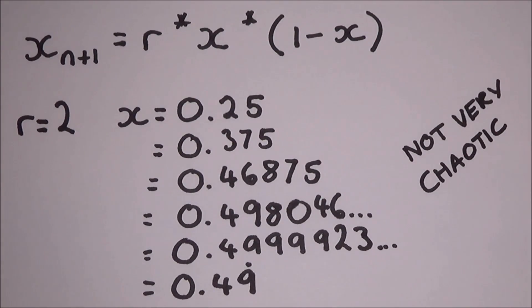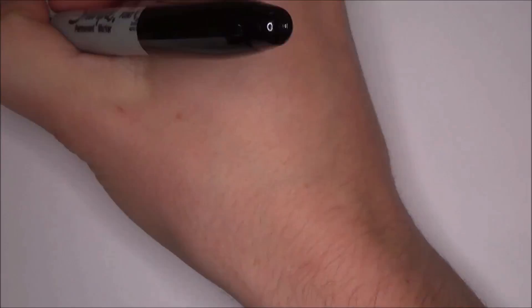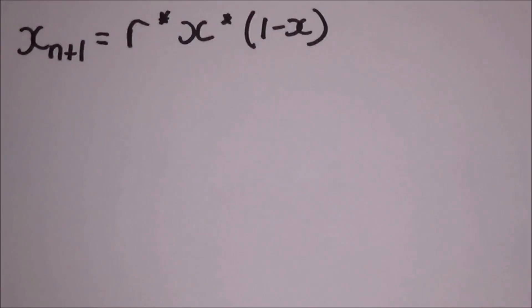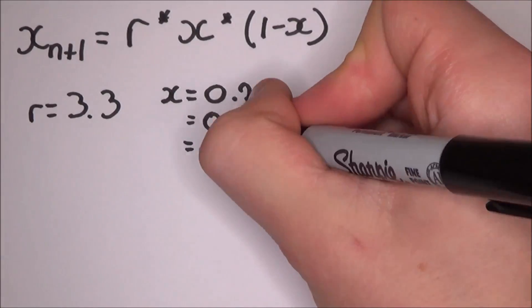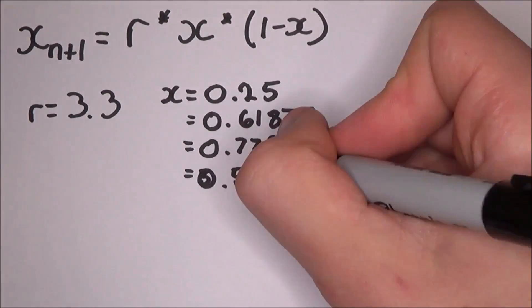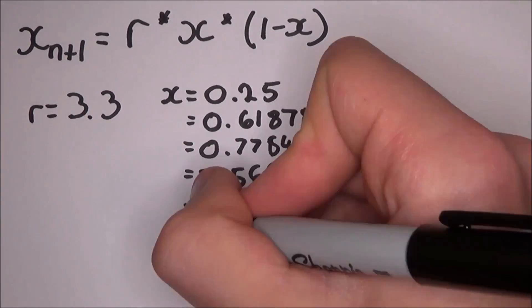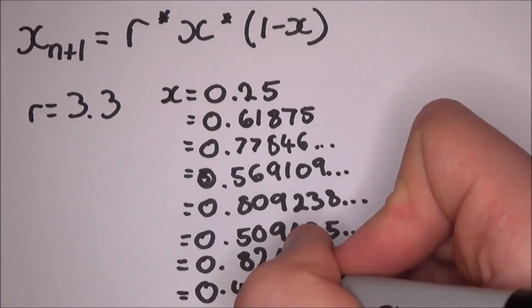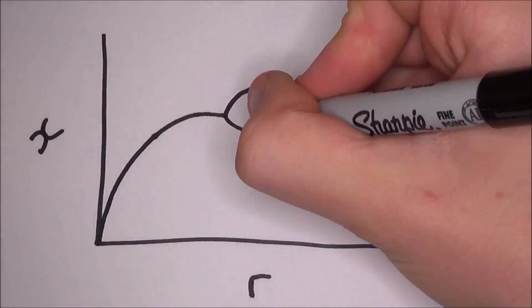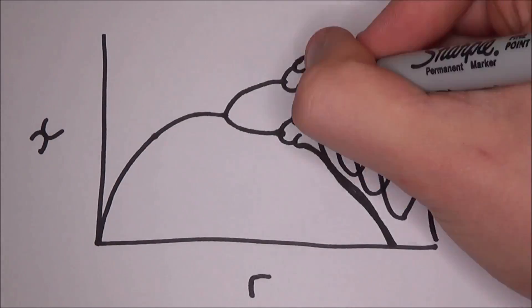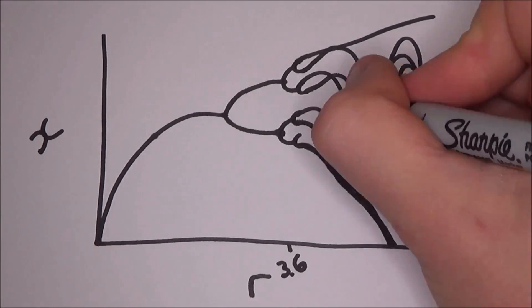This is a regular attractor — doesn't seem very chaotic. But if we ramp r up to 3.3, we get a new sequence of numbers, and you can see that this is bouncing around between 0.82 and 0.48. We can even plot this on a graph and we can see that as r increases, the attractor gets very chaotic.